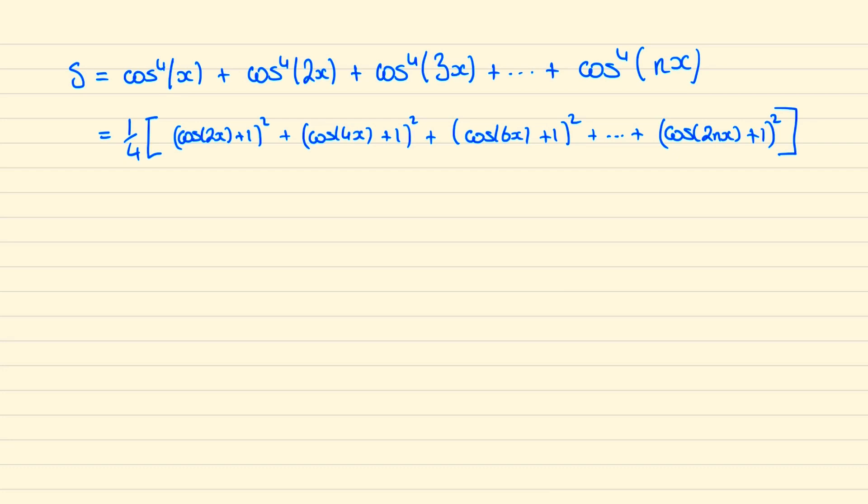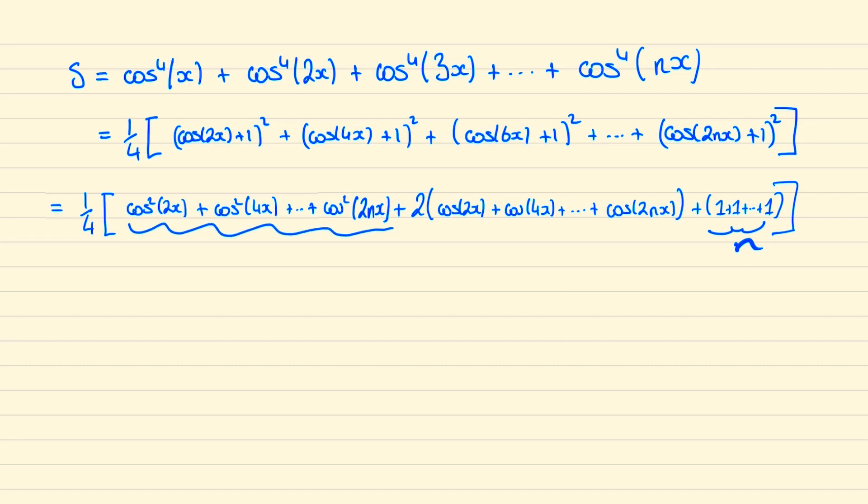We can expand each of these brackets to collect all of the cos square terms, all of the cos terms, and then all of the plus ones. This will leave us with the following. Notice here that we have n terms, so all of these ones being added together is just the same as n.